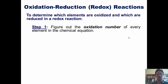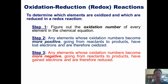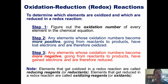One: figure out the oxidation number of every element in the chemical reaction. Two: any elements whose oxidation numbers become more positive going from left to right have lost electrons and are therefore oxidized. Three: any elements whose oxidation numbers have become more negative going from left to right have gained electrons and have therefore gotten reduced. Elements that get oxidized in redox reactions are called reducing agents, or reductants. Elements that get reduced in a redox reaction are called oxidizing agents, or oxidants.